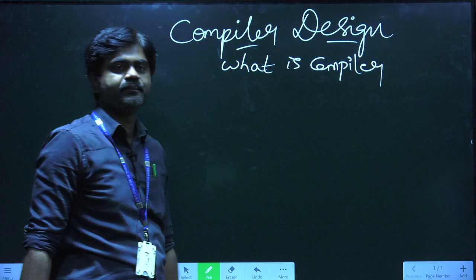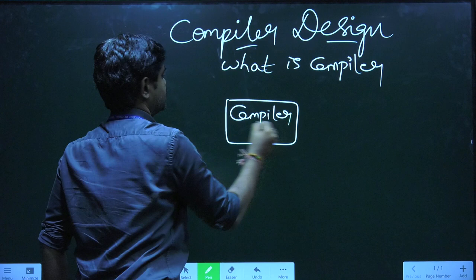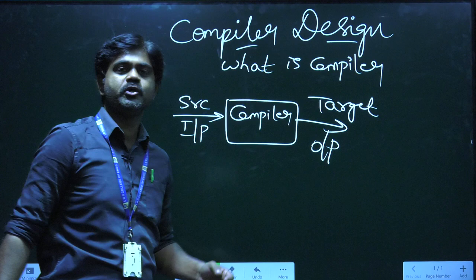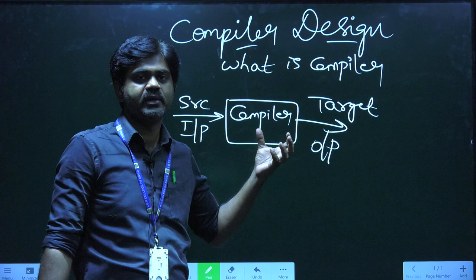So what is a compiler? Here, we'll provide a source input and finally we'll get a target output. A source input is provided to a compiler and we'll get a target output. This compiler is also called as a translator, which translates into human understandable format.